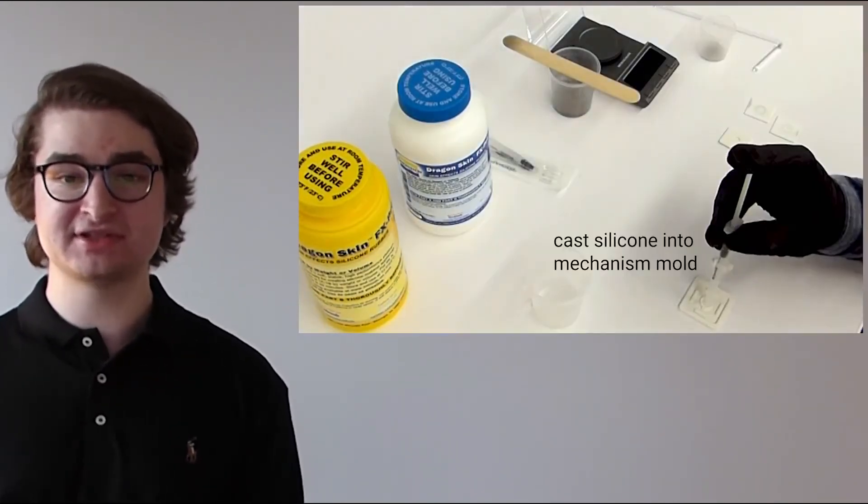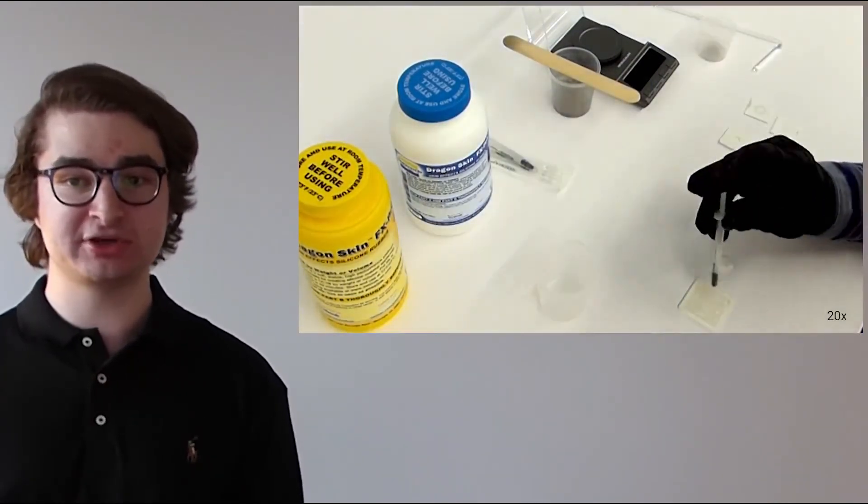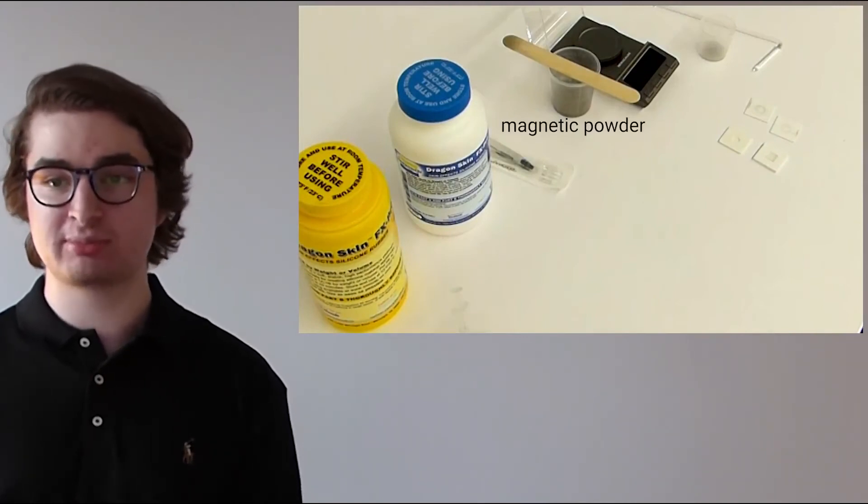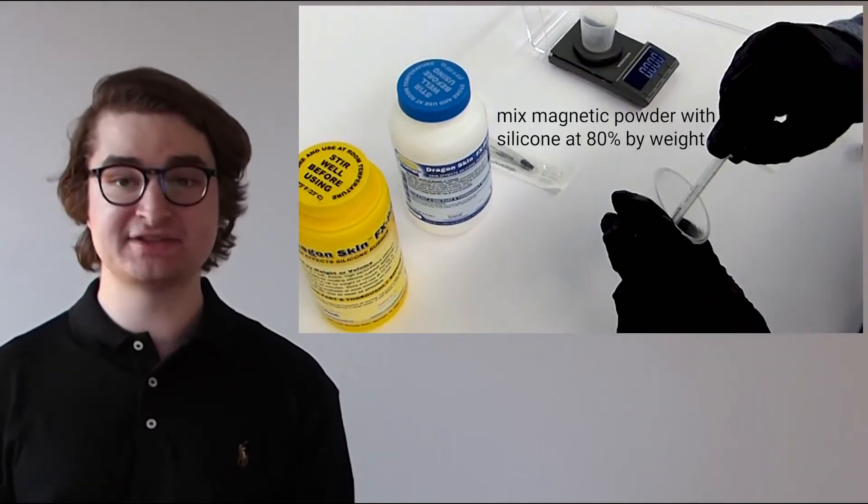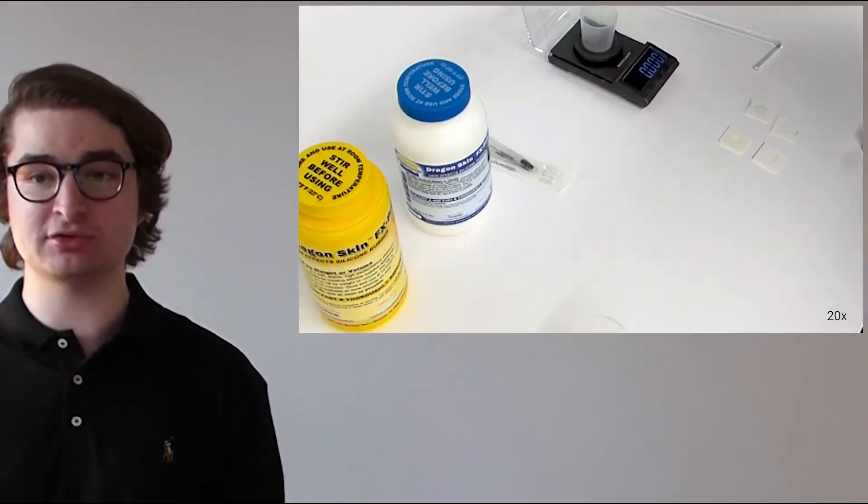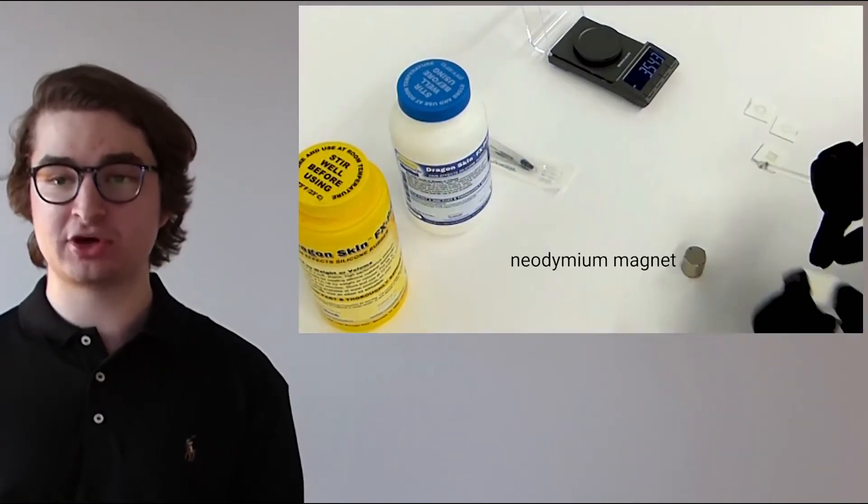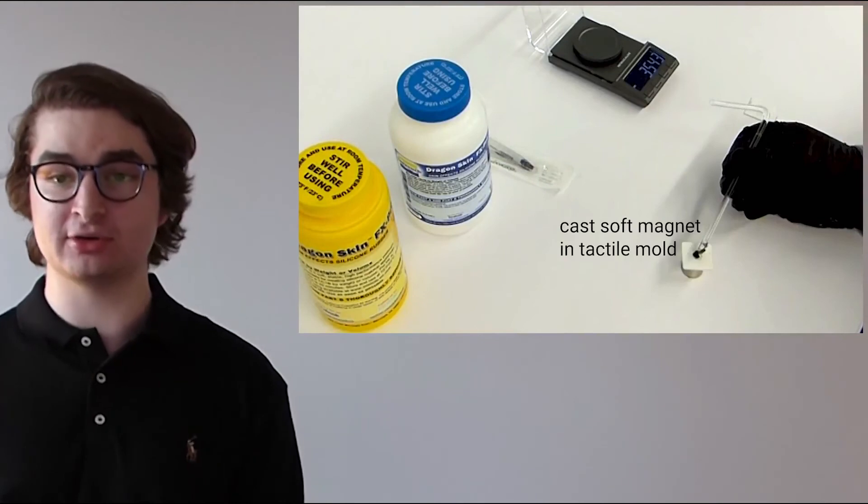The mixture is then cast into a 3D printed mold to shape the magnet. The mold is then held between two strong permanent magnets, and this strong, about 1.1 Tesla field magnetizes and aligns the polarities of the individual particles. This process results in a composite with a strong, permanent magnetic field, while remaining flexible due to the silicone holding it together.